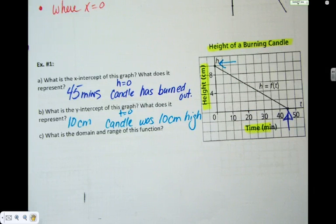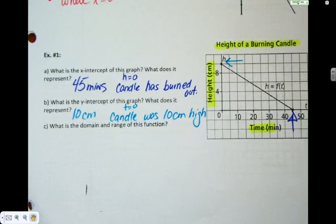So, really, in this context, what the two intercepts give us are the beginning and the end. At the beginning, how high was the candle? 10 centimeters. At the end, when it's zero, how much time did that take? 45 seconds. And then we're just going to throw in domain and range just to practice.